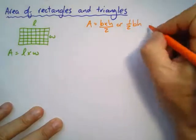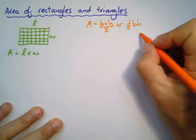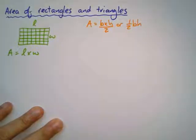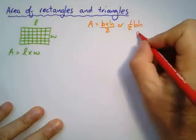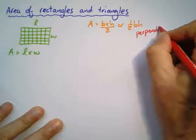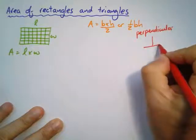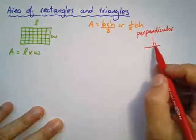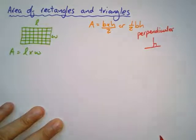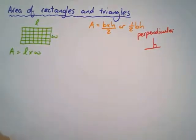So the word perpendicular, what does it mean? Perpendicular is shown like this, which means it is straight down, 90 degrees onto it, perpendicular, 90 degrees down.